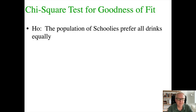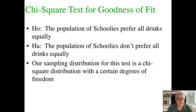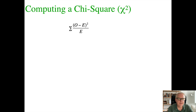This new hypothesis test is called a chi-square test for goodness of fit. The null hypothesis is that the population of Schoolies prefer all drinks equally. The alternative hypothesis — taken if we reject the null — is that the population of Schoolies don't prefer all drinks equally. Our comparison distribution is a chi-square distribution with a certain degrees of freedom. This is our new statistic: like we had a T, a Z, and an R before, now we have chi-square — the Greek letter that looks like X-squared.